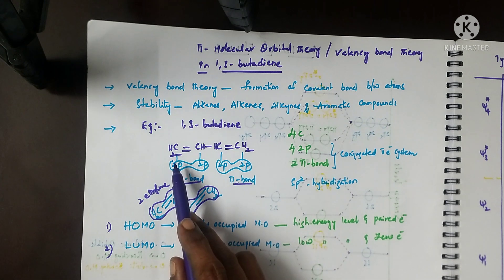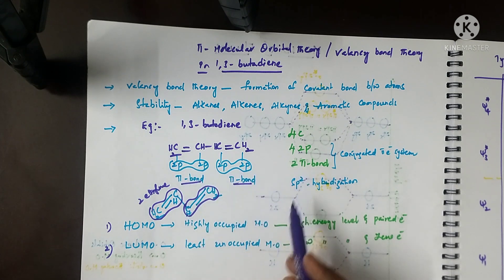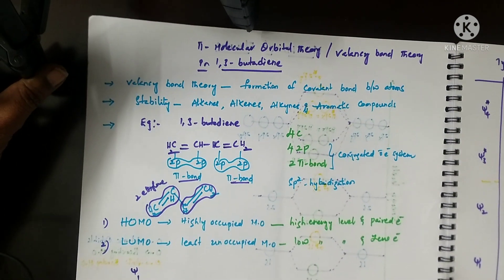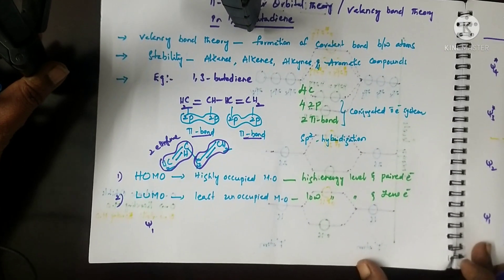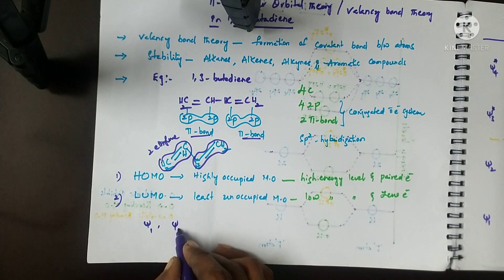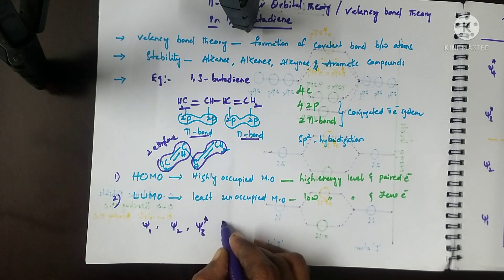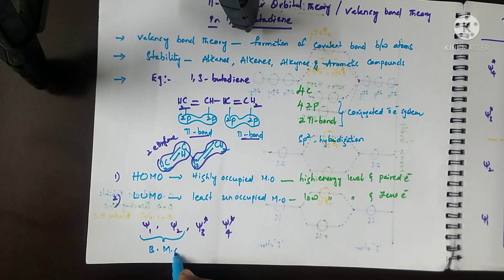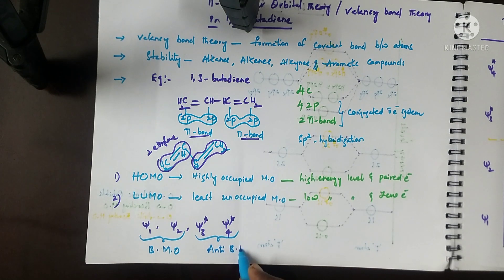Through lateral overlapping, the four 2p orbitals are involved in forming four molecular orbitals: psi 1, psi 2, psi 3 star, and psi 4 star. Psi 1 and psi 2 are bonding molecular orbitals, while psi 3 star and psi 4 star are anti-bonding molecular orbitals.